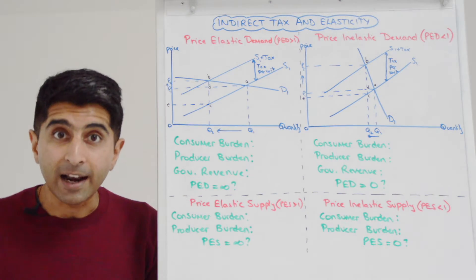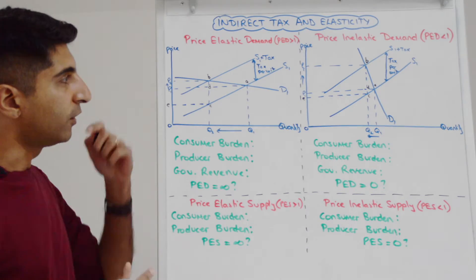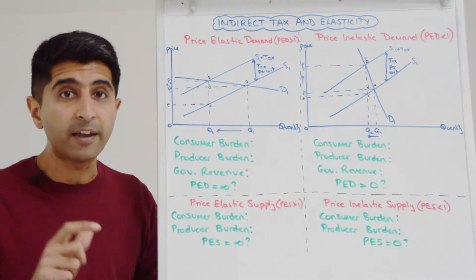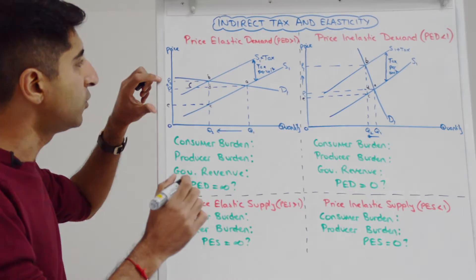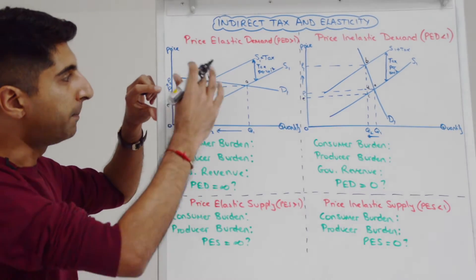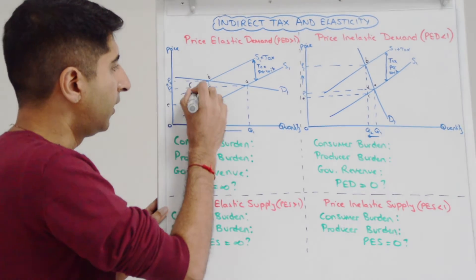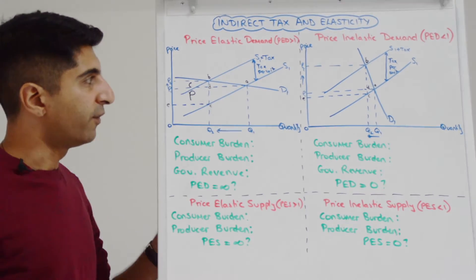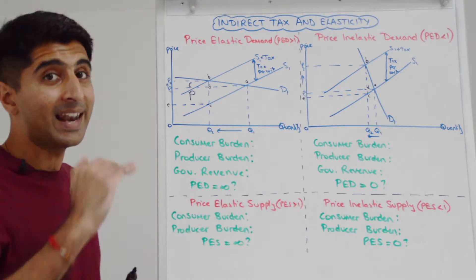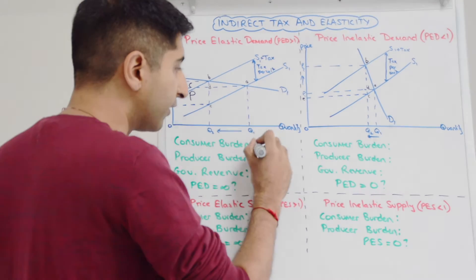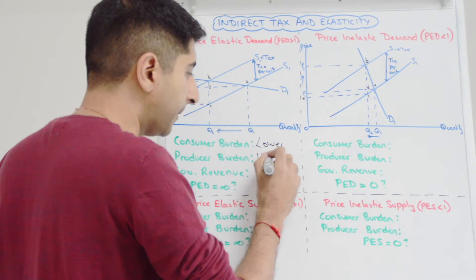Now we break that up to look at the consumer burden and the producer burden. The consumer burden is the difference-in-price portion of that box — let's label that C, so P2P1BD. The rest is the producer burden, labelled P. What we can clearly see is that when demand is price elastic, the consumer burden is lower and the producer burden is higher.